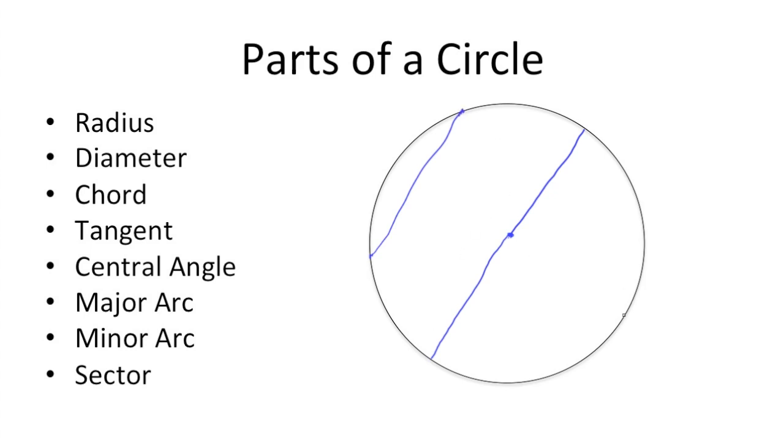A tangent point is formed by a line or a line segment that touches a circle in only one place at only one point. Another fact about tangents is that if you were to draw a line from the center of the circle to the tangent point, it forms a right angle, which means that they're perpendicular to each other.